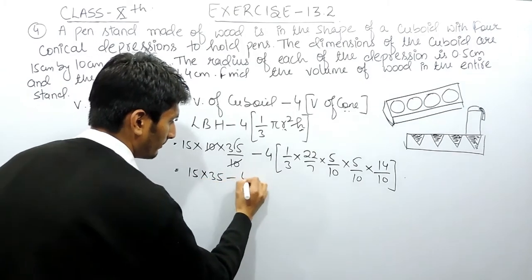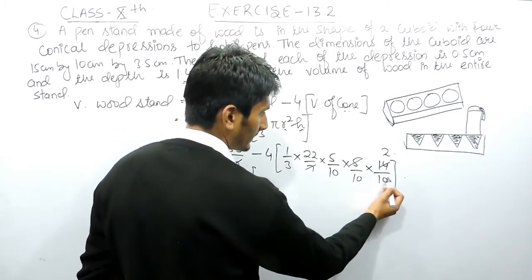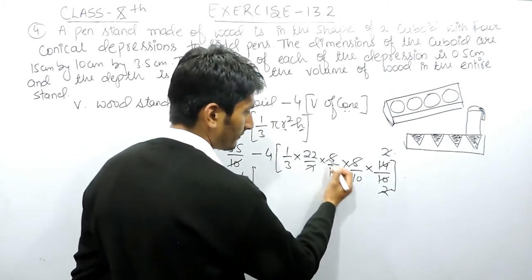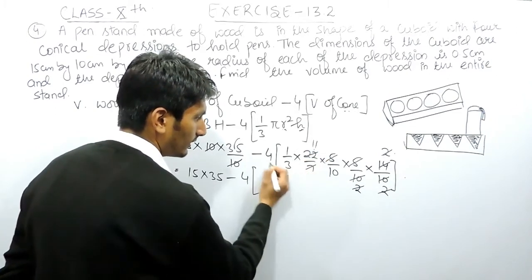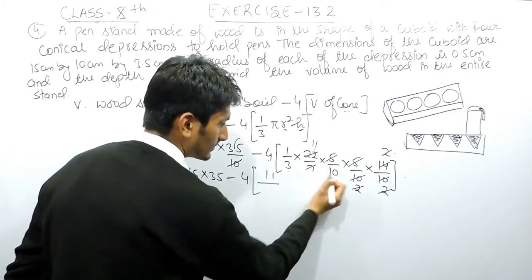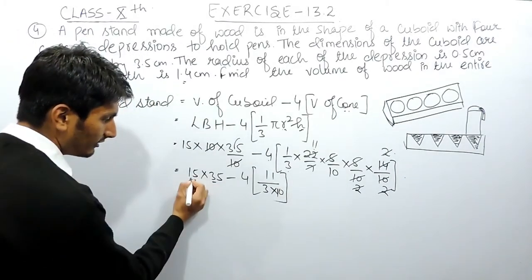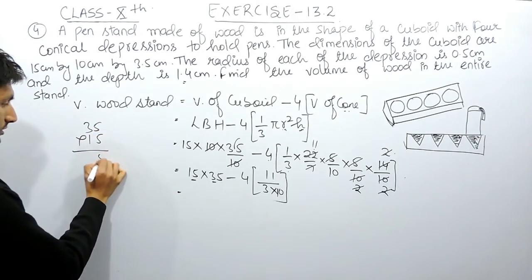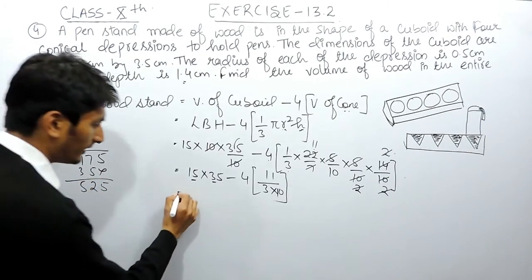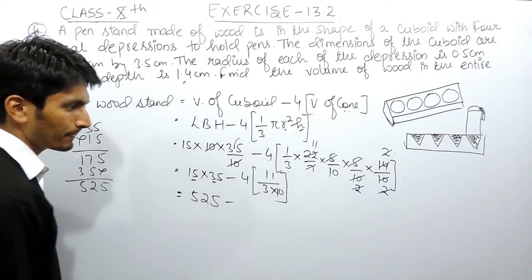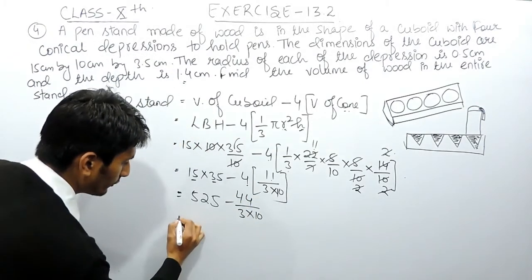Solving further, 15 × 10 × 3.5 gives 525. Now simplifying the cone term: cancelling common factors — 2 cancels with 2, 5 cancels, and 22 divided gives 11 — so the cone term simplifies to 11/(3 × 10). Multiplying out, 15 × 35 = 525, and the four-cone term becomes 44/(3 × 10).